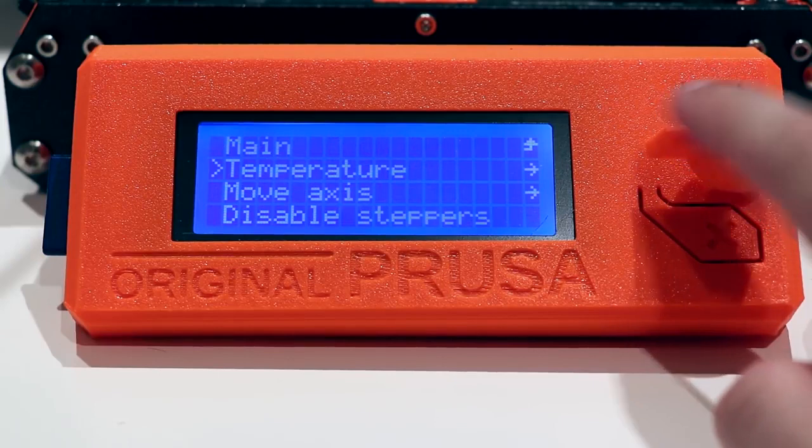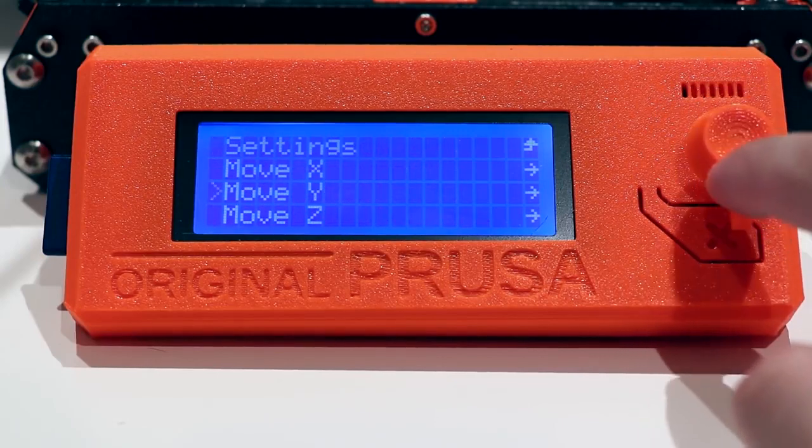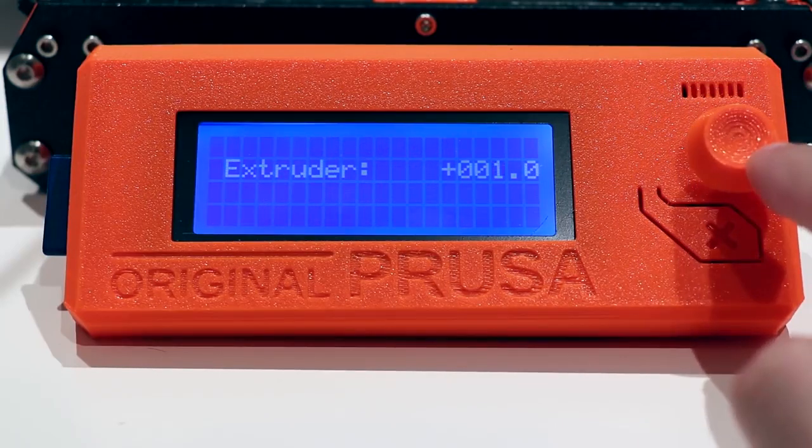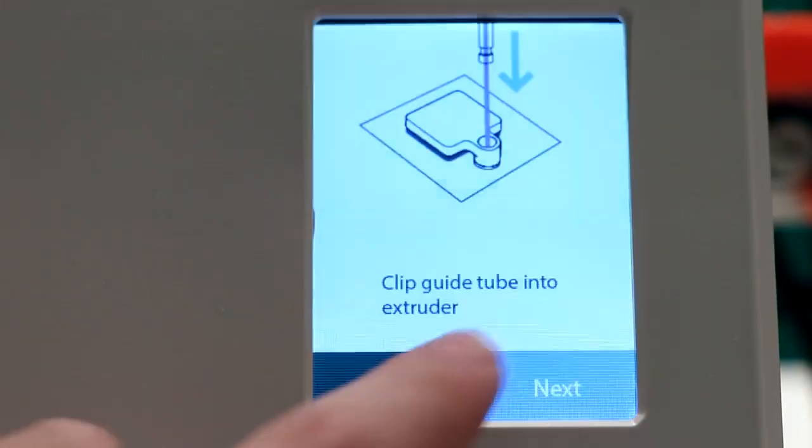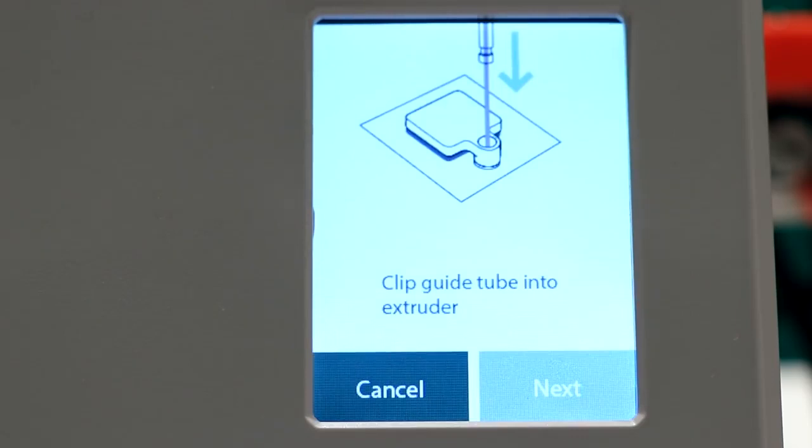This applies for all printers including deltas and bowdens. We are simply trying to make sure the gears grip onto the filament. Palette 2 will instruct us to secure the outgoing tube into the extruder clip like so.